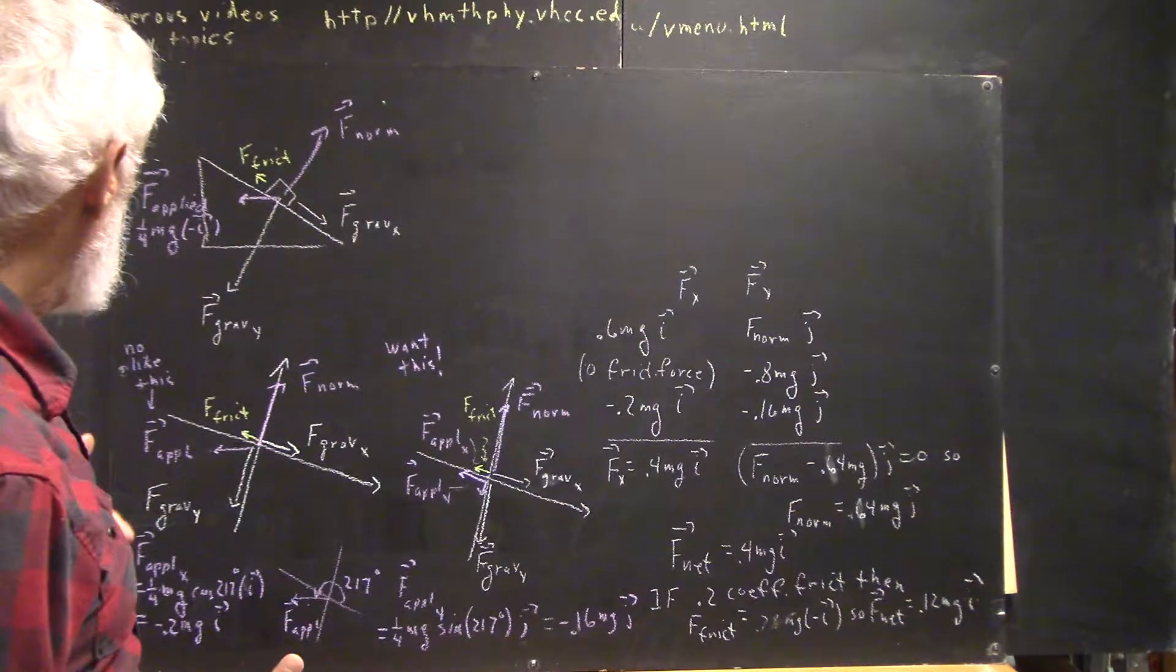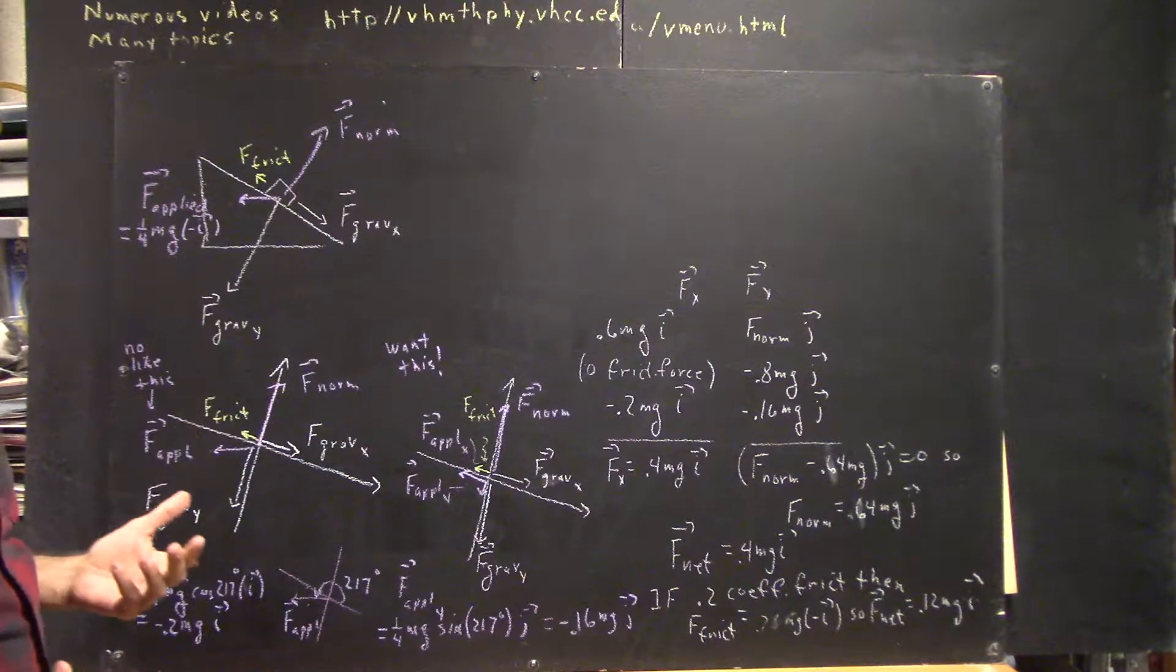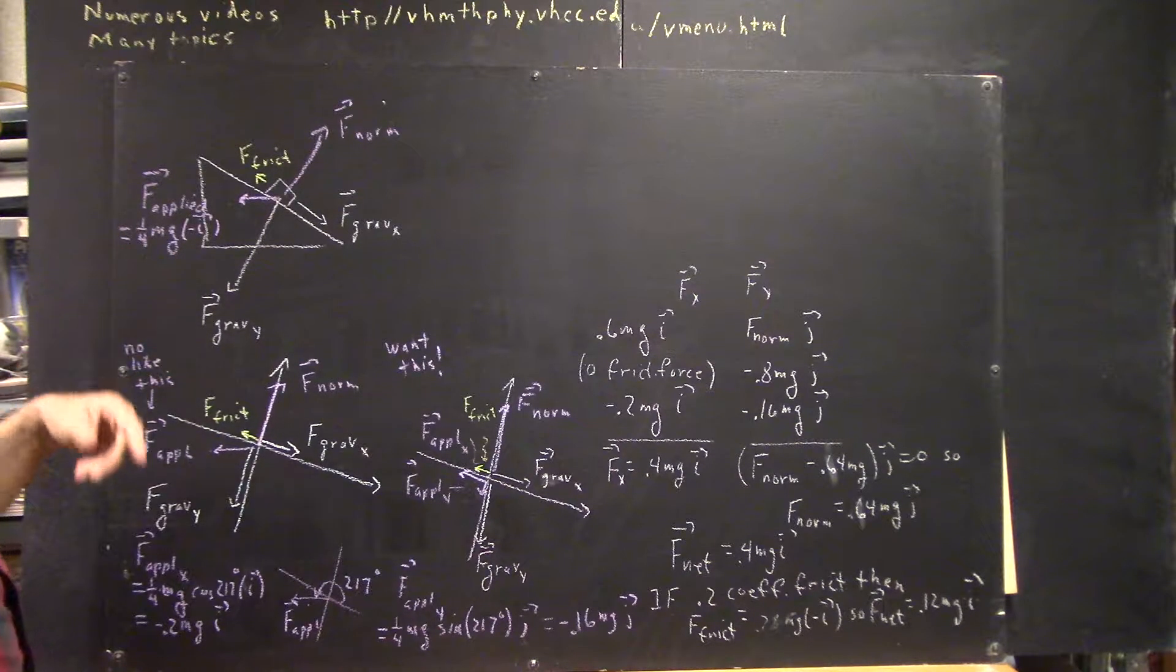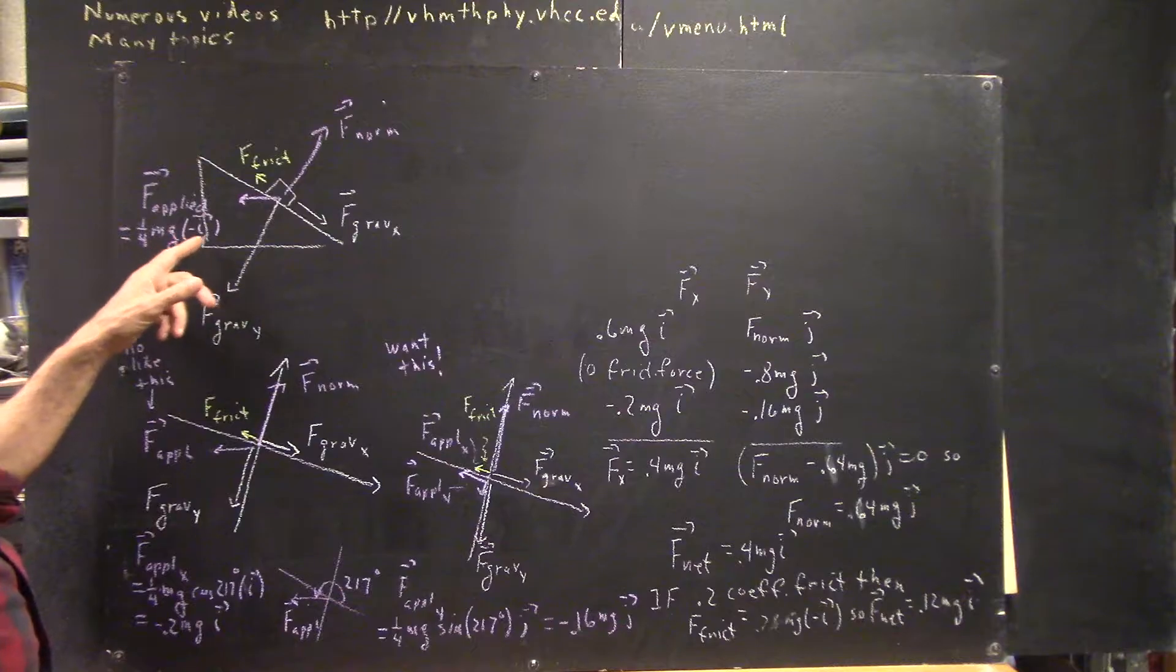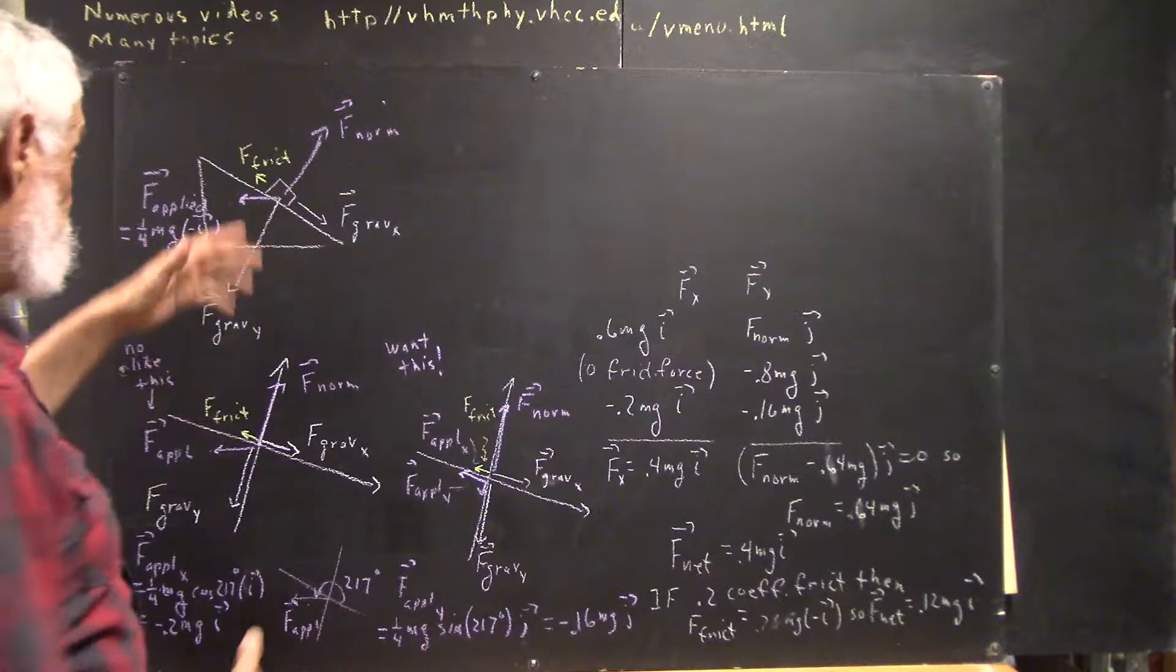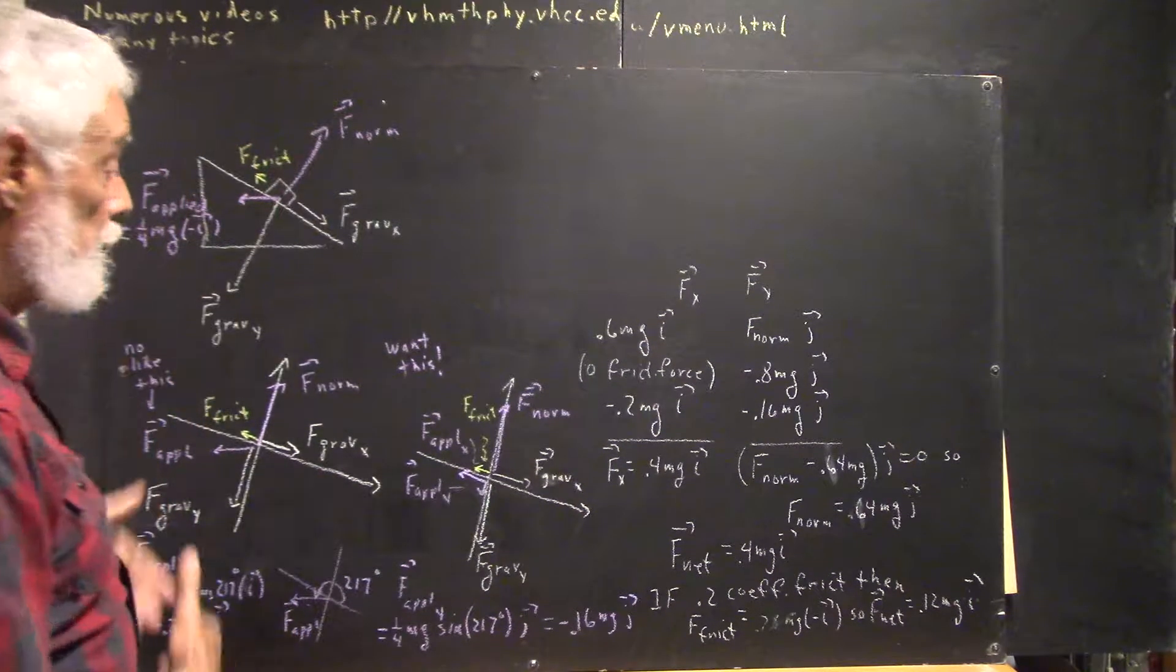And it has a magnitude that's one-fourth the weight, which means weight being mg, one-fourth of the mg. And that's in the negative i direction. So we have this force in addition to the others.